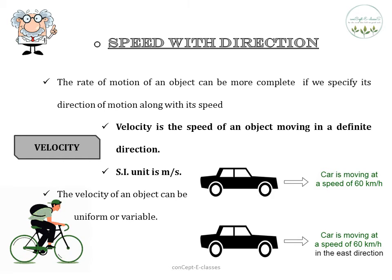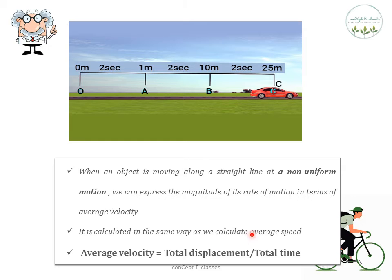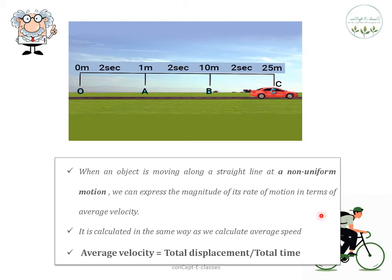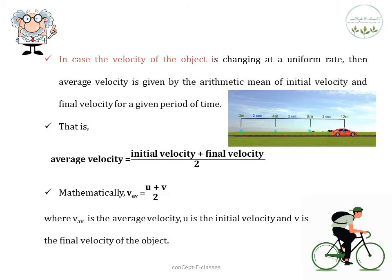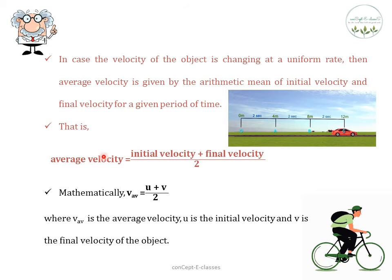The velocity of an object can be uniform or variable. When an object is moving in non-uniform motion — that is, it covers unequal distance at equal intervals of time — we can express the rate of motion in terms of average velocity. Average velocity = total displacement ÷ total time taken. Now in the case of uniform motion — where the object covers equal distance in equal intervals of time — the average velocity is given by the arithmetic mean of the initial velocity and the final velocity for that period of time.